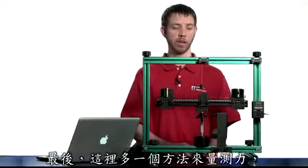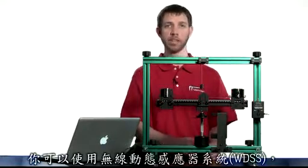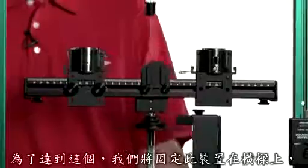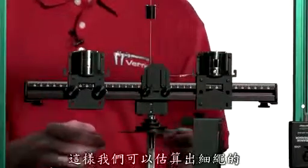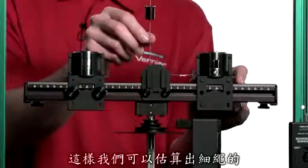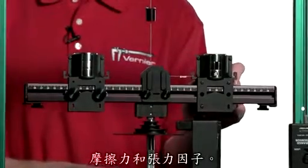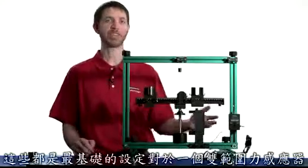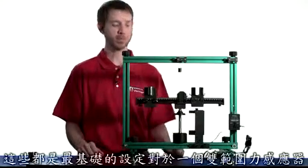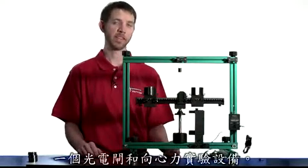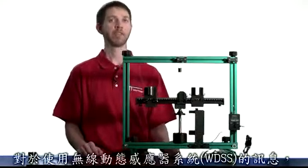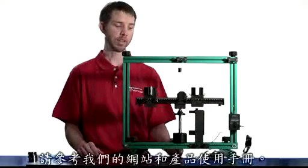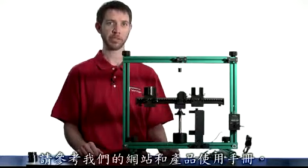Finally, there is one more way you can measure the force. You can use the wireless dynamic sensor system. To do so, we will mount the device on the beam. And we will be able to eliminate the factors of friction and stretching in the string. Those are the basics for setting up a dual range force sensor, a vernier photogate, and the centripetal force apparatus. For information on using the wireless dynamic sensor system, please see our website and the product user manual.